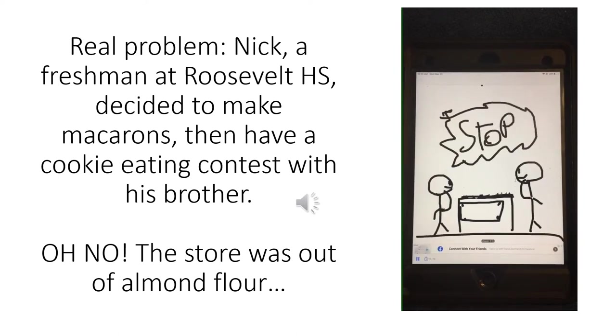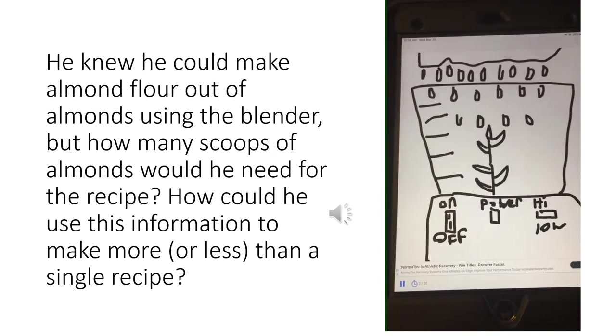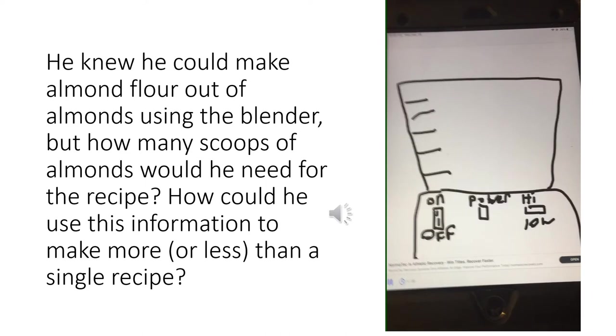So let's go back to our real life problem. Nick, a freshman at Roosevelt High School, decided to make macarons, then have a cookie eating contest with his brother. Oh no! The store was out of almond flour! So he knew he could make almond flour out of almonds using the blender, but how many scoops of almonds would he need for the recipe? How could he use this information to make more or less than a single recipe?